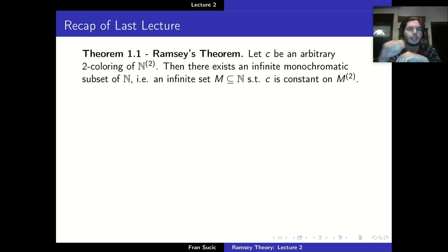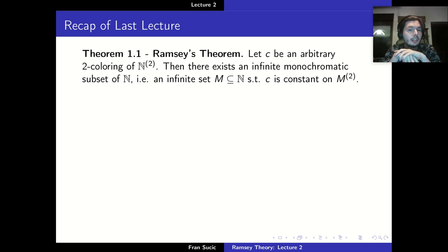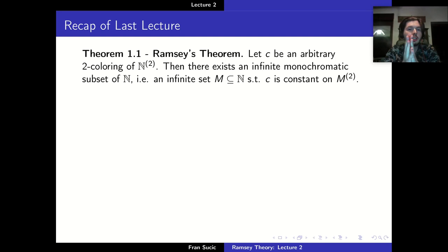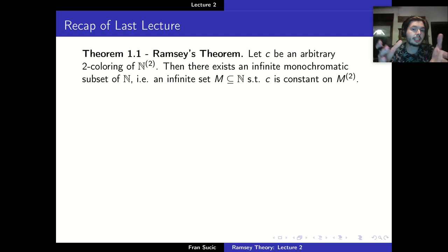So this is just a quick recap. Last time we proved Ramsey's theorem which says the following: if we have an arbitrary two-coloring of the second layer of N, call it C, then there exists an infinite monochromatic subset of N — an infinite subset of N, call it M, such that C is constant on the second layer of M. Remember, layers are just all the subsets of a set of a given size, so in this case it would be all the pairs of the natural numbers.